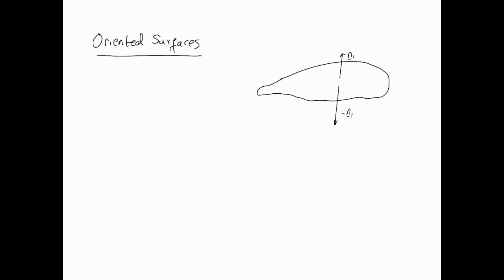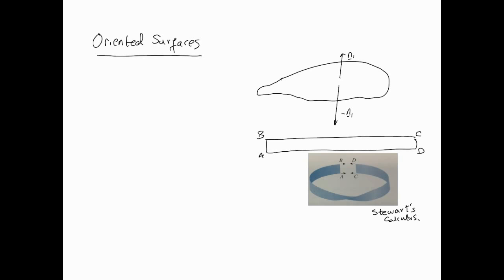You might think that's every surface — but consider the Möbius strip. It's a well-known surface made by taking a strip of paper, giving it one twist, and joining the ends. So if you take strip ABCD and join it with this twist, this is known as the Möbius strip — named after Möbius, a German geometer. Because of this twist, it has only one side.